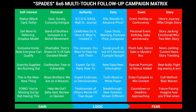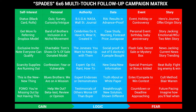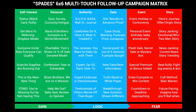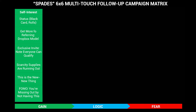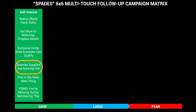The things in green are gain messages — we'll be talking about self-interest and personal. SPADES is an acronym for self-interest, personal authority, data, events, and stories — those are the six types of messages we're going to create. Under each of those is another six. For self-interest in the gain section, we talk about status: black cards, Rolls Royces. Or how to get more for referring, exclusive invites, supplies running out. And 'new' — the new thing. The number one reason people buy a house or a car is they're tired of the old one. New is a big deal.